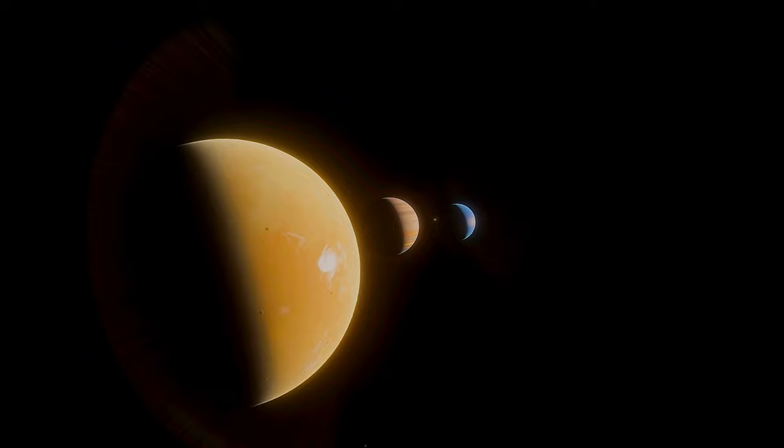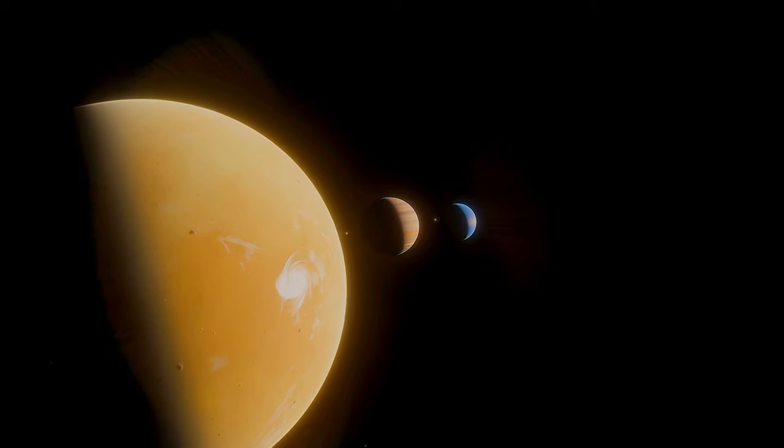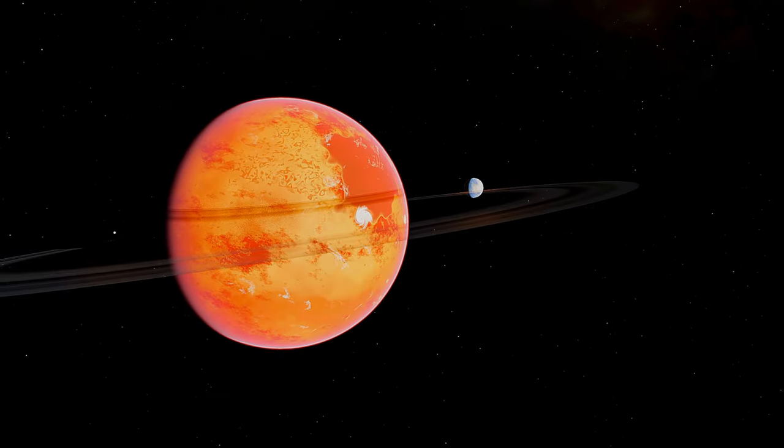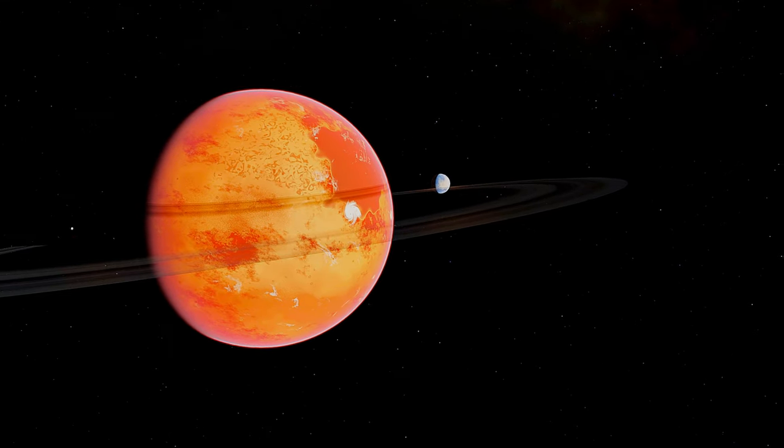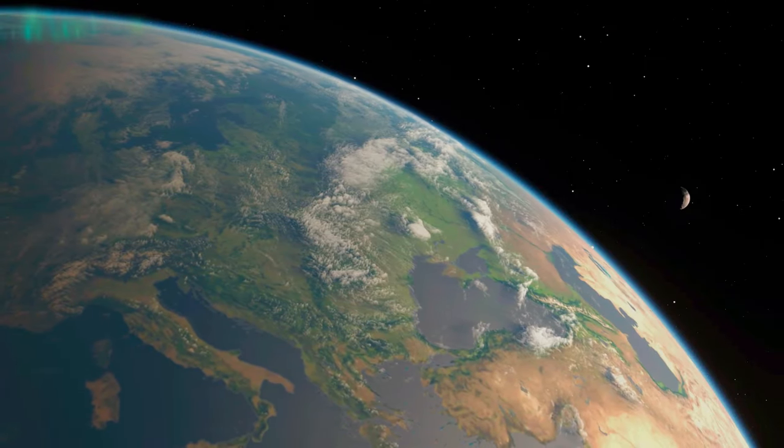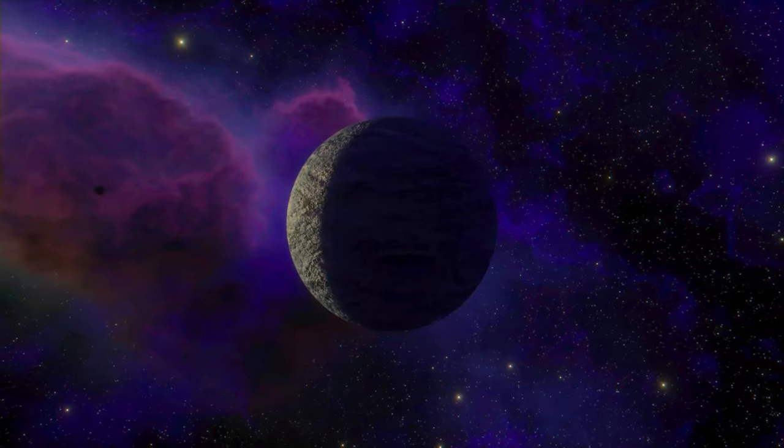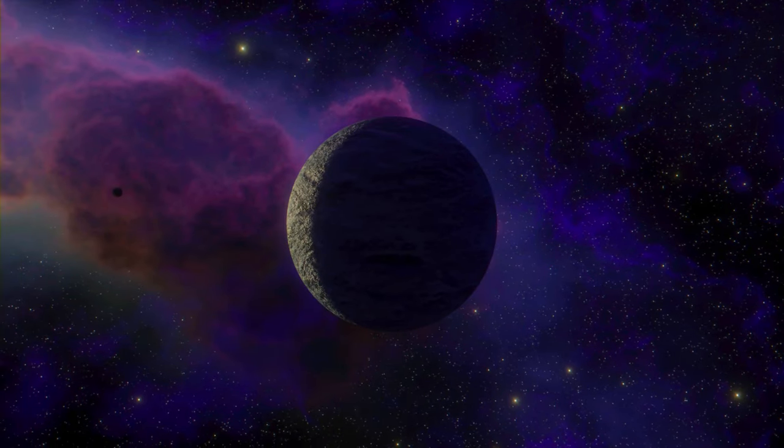Moving further outward, we encounter the gas giants. The largest planet in our solar system, Jupiter, is a massive ball of gas with a complex system of moons and a distinctive great red spot, a giant storm that has raged for centuries.